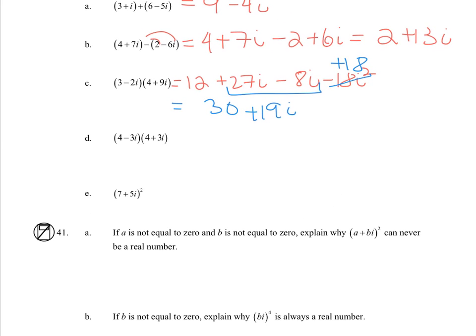For d, I notice these complex numbers are actually complex conjugates, because the sign in the middle is different, but everything else is the same. So I know when I multiply them together, I should get a real number answer. So let's make sure. So i² is negative 1, so that becomes positive 9. These add to 0, so 16 + 9 = 25.